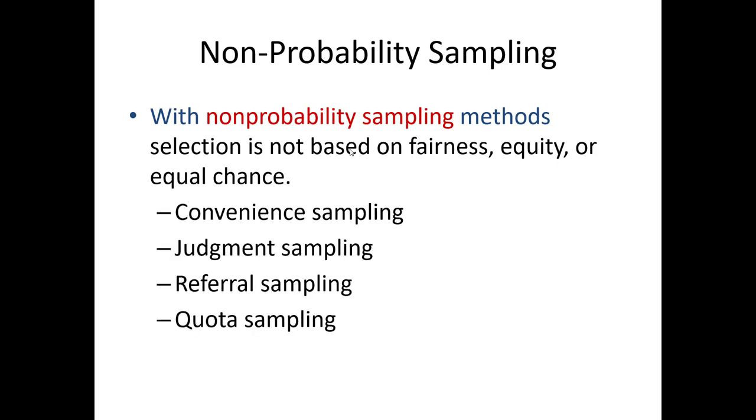Perhaps the four most common types of non-probability sampling are convenience sampling, judgment, referral, and quota. Let's illustrate each briefly.